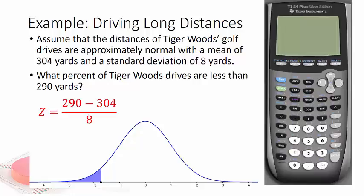So the z-score, we've got to go with the data value, 290, minus 304. So we get a negative z value of negative 1.75, which makes sense because that would be below his average.